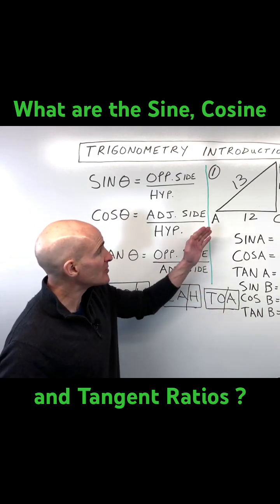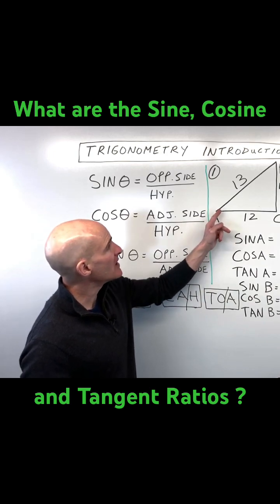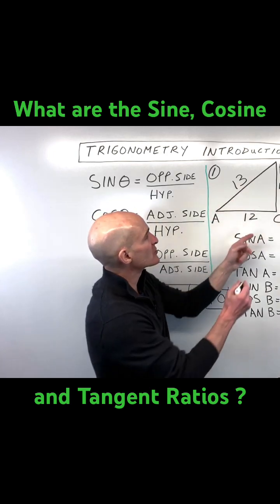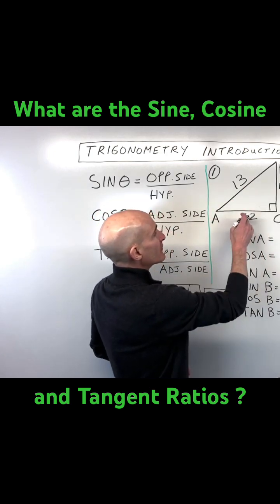Let's look at an introductory example. Say we have this right triangle right here — 5, 12...